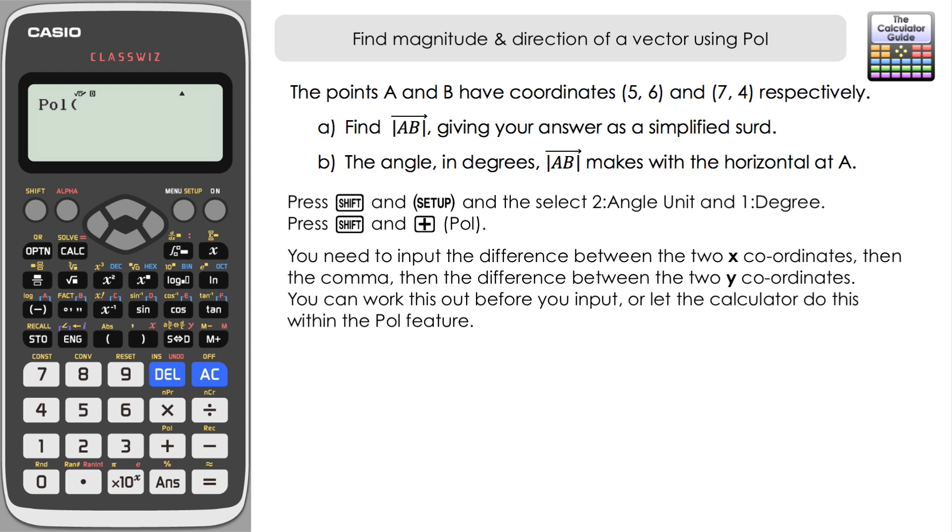Now what we need to do here is we need to work out the difference between both the x and y coordinates and input those into the poll feature. I'm essentially going to take the furthest along on the x which is point b and subtract the values from point a. So we're going to have seven minus five for our x value that we're going to input. We're going to have four minus six as our y value. And actually I'm just going to let the calculator do that. I know that they are relatively simple sums, it's going to be two and minus two, but what if we had slightly more complex coordinates? We could just let the calculator do it for us and it will still work. So we've got essentially the x coordinate of b minus the x coordinate of a, comma, y coordinate of b minus the y coordinate of a, and then close the brackets and press equals.